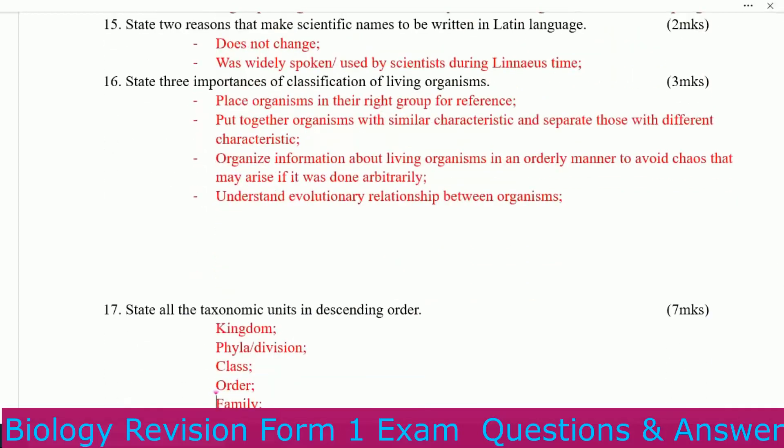State three importances of classification of living organisms. Number one: to place organisms in their right groups for reference. Number two: to put together organisms with similar characteristics and separate those with different characteristics. Number three: to organize information about living organisms in an orderly manner to avoid chaos that may arise if it was done arbitrarily.